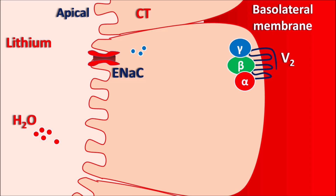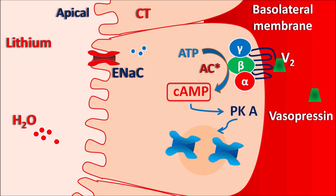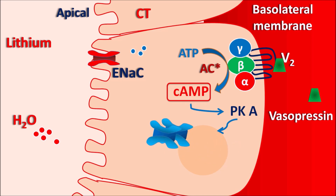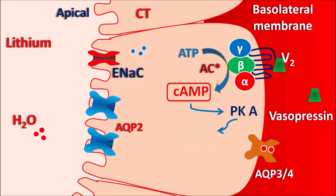V2 receptors are Gs-coupled (stimulatory), working through the alpha subunit. When vasopressin binds to V2 receptors, it stimulates the adenylyl cyclase system, converting ATP into the secondary messenger cyclic AMP (cAMP). cAMP then stimulates protein kinase A, a phosphorylating enzyme, which drives gene transcription and protein synthesis, increasing the expression of aquaporins. Aquaporin-2 (AQP2) channels are expressed on the apical membrane, while AQP3 and AQP4 are expressed on the basolateral membrane, allowing water molecules to be reabsorbed into systemic circulation.